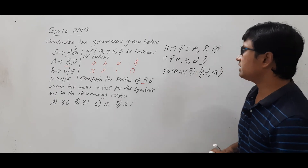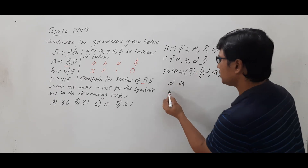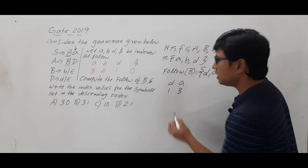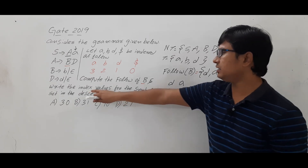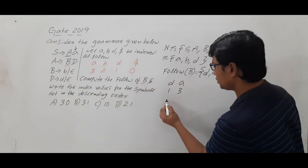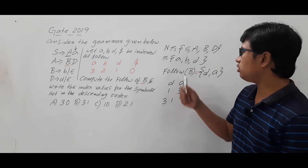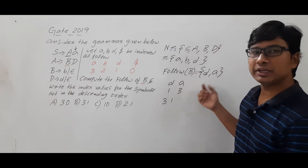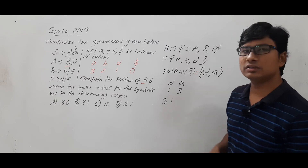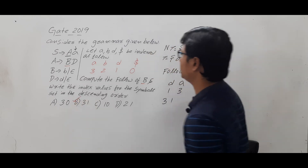Now write the index values for the Follow(B) symbols {d, a} in descending order. D's index value is 1, and A's index value is 3. Writing them in descending order gives 3, 1. So the right answer for this question is option B.